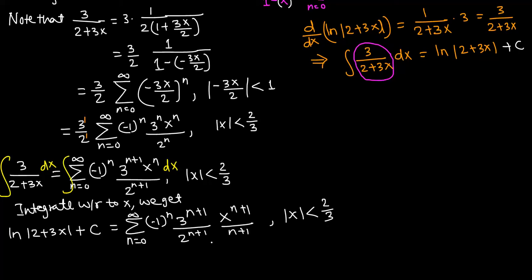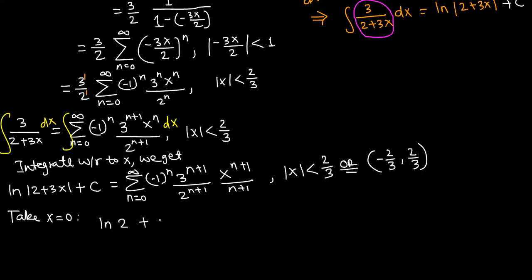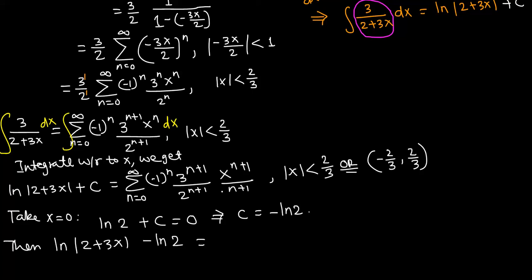We need to find the value of C. This power series is valid for |x| less than 2/3, i.e., x between negative 2/3 and 2/3. Substituting x equals 0: the left side gives natural log of 2 plus C. On the right side, x raised to any power is 0, so the entire sum is 0. Therefore C equals negative natural log of 2. Plugging this back in, natural log of 2 plus 3x minus natural log of 2 equals the power series with negative 1 to the n, 3 raised to n plus 1 over 2 raised to n plus 1, times x raised to n plus 1 over n plus 1.